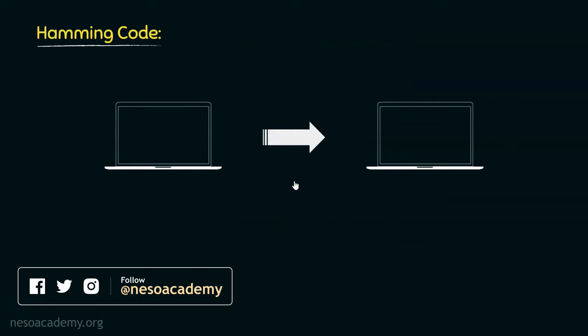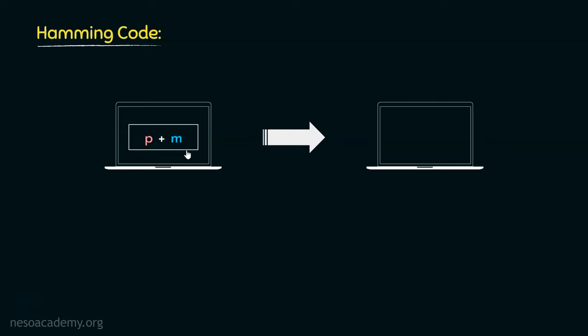Say two different computers are in communication and the sender wants to transmit a message of m bits. In order to handle those m bits, p parity bits are appended with that particular message. So in its entirety, p plus m bits are transmitted. Now once this data is transmitted, at the receiver side, from a broader perspective, there can be two different scenarios.